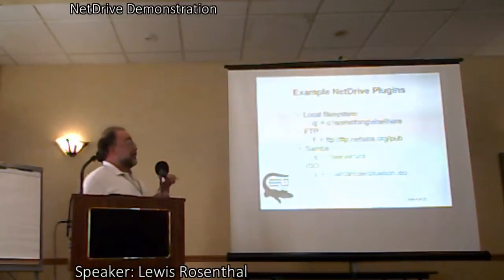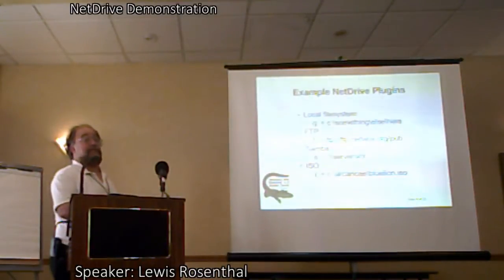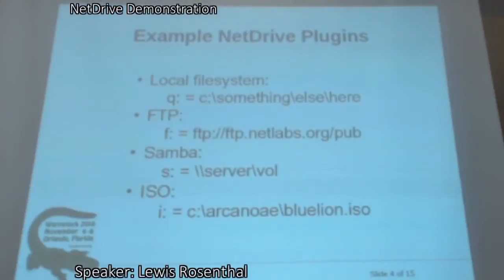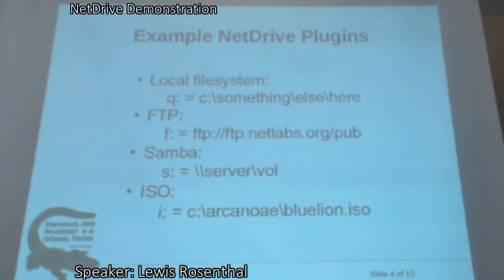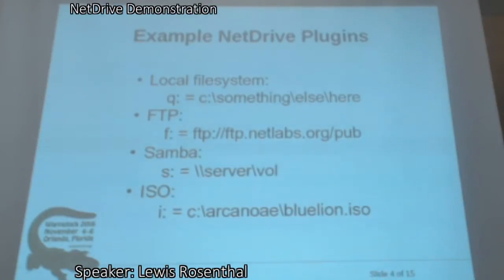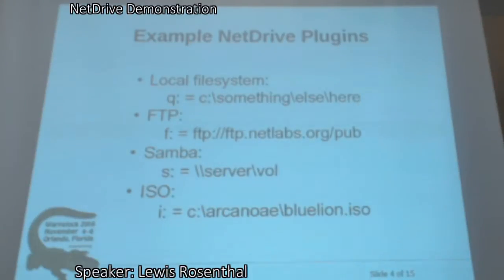And ISO: let's say you have an image for a CD or a DVD. Blue Line is a DVD — it outgrew the CD size several iterations ago in our alpha stage. So you want to access files around the Blue Line ISO without having to burn the disk again. You can use the ISO plug-in and map that to a drive letter. Now all the content on the Blue Line image is available under that drive letter as though you burned the DVD and put it in your drive.